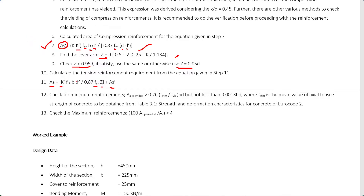In addition to calculating the compression and tension reinforcement areas, we have to check certain limits for minimum and maximum reinforcement. According to Eurocode 2, the reinforcement provided shall be greater than 0.26 × (FCTM / FYK) × BD, and this value shall not be less than 0.0013BD. Both conditions must be met.